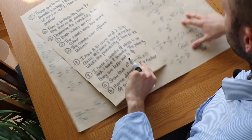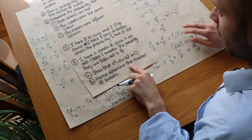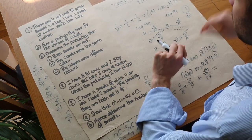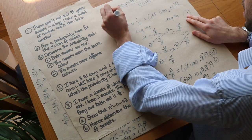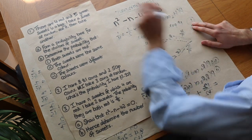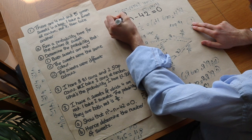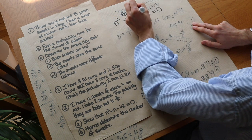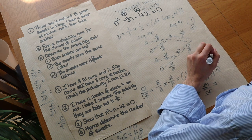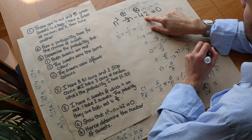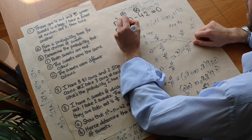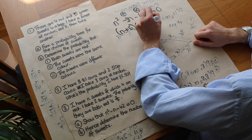Finally, to determine the number of sweets we solve n² − n − 42 = 0. We need two numbers that add to −1 and multiply to −42: that's +6 and −7. Factorising: (n + 6)(n − 7) = 0.